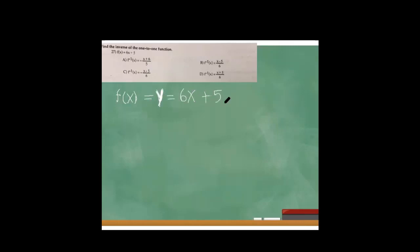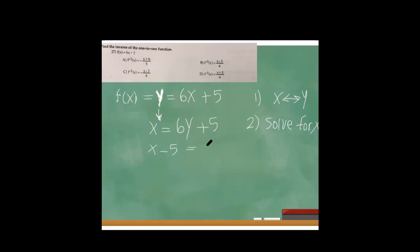Find the inverse of the one-to-one function. In order to have an inverse, the function must be one-to-one. We have f(x), or y, equals 6x plus 5. To find the inverse, follow two steps: step one is to exchange the positions of x and y; step two is to solve for y. So I subtract 5 from both sides and then divide both sides by 6.